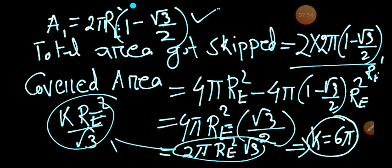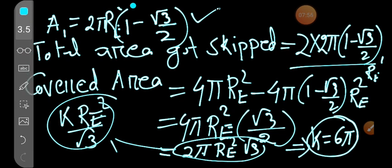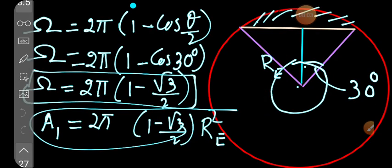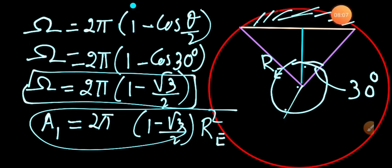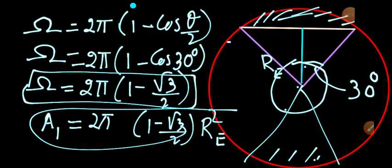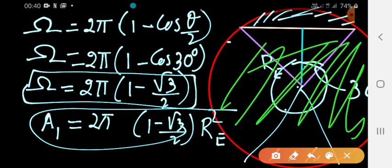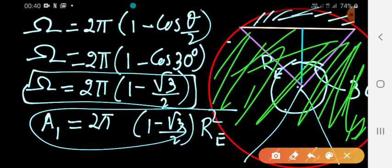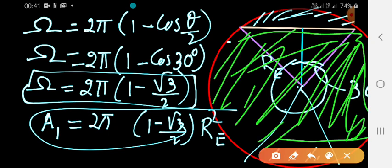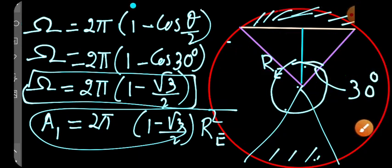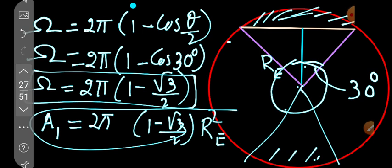So this much area will be covered and the remaining area will not be covered by the satellite while communicating and orbiting at a radius of 2Re. The polar cap regions at the top and bottom will not be covered, while all the green equatorial region in between will be covered by the satellite revolving around the Earth.